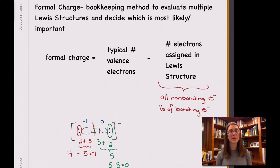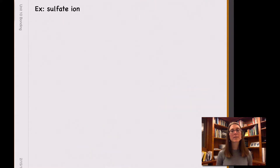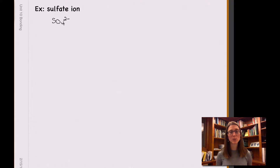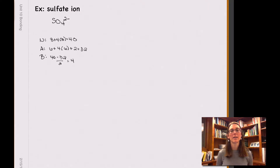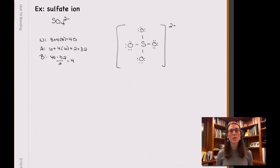Let's take a look at one more example. The sulfate ion has the formula SO₄²⁻. When you start this process, you need to start with a Lewis structure. So you're going to draw it as usual, and once you've drawn it, you're going to draw your initial Lewis structure. Once you have your Lewis structure, then it's time to look at the number of assigned electrons and compare that to the number of valence electrons those elements and atoms would normally have.